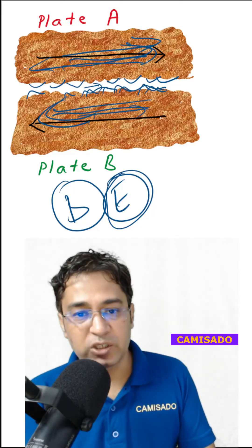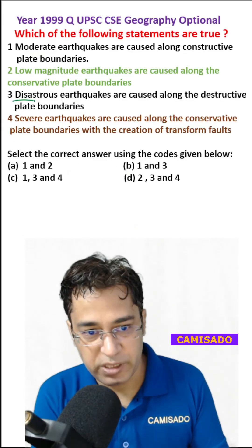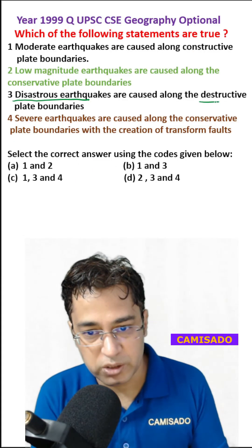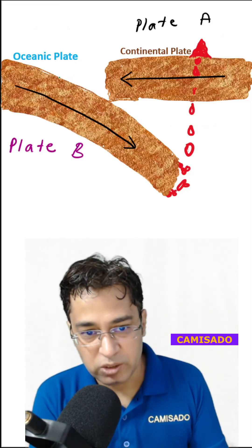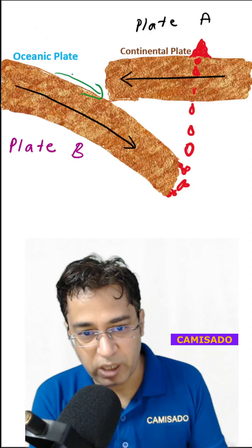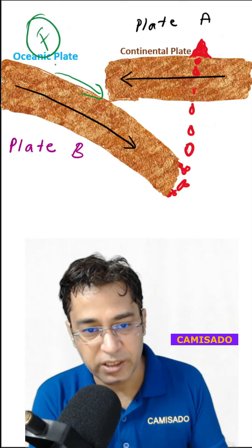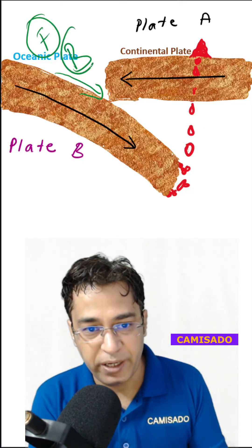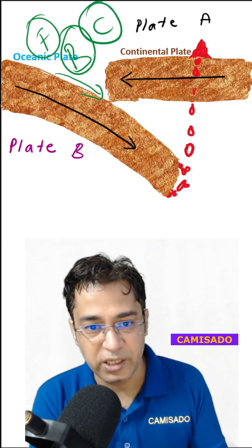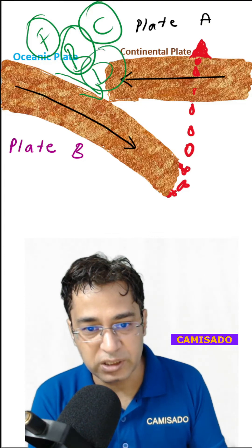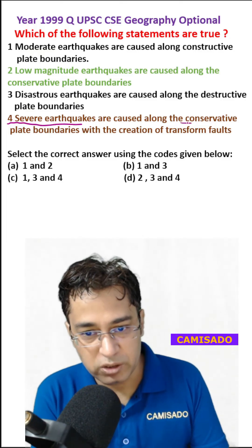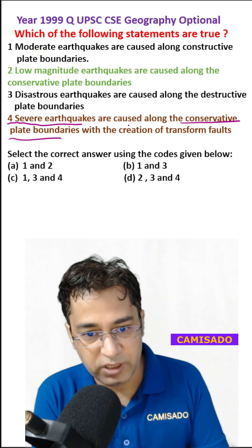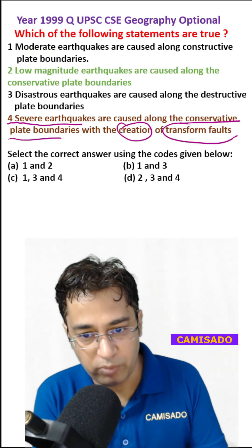The third statement says disastrous earthquakes are caused along destructive plate boundaries. At a destructive plate boundary, as the oceanic plate goes down, there is a lot of friction occurring; the plate is also bending and cracking. Therefore, disastrous earthquakes can occur along destructive plate boundaries.